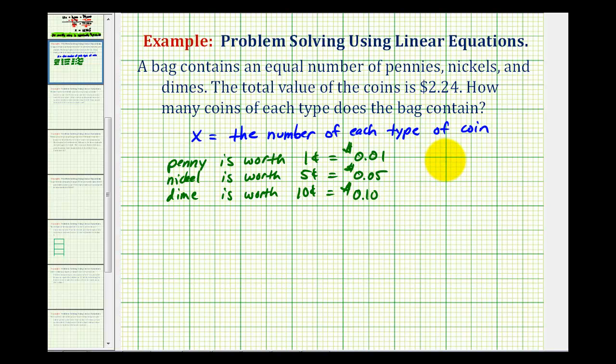So the last thing we should recognize is that two dollars and twenty-four cents would be equal to 224 cents. So I think to avoid decimals, we'll go ahead and write the equation using cents.